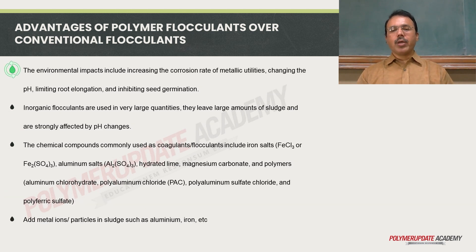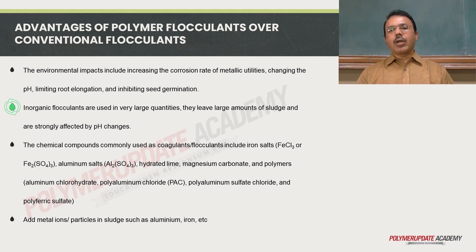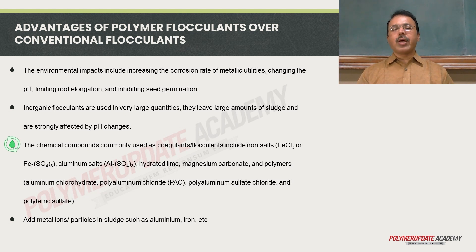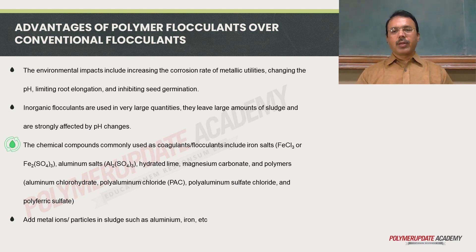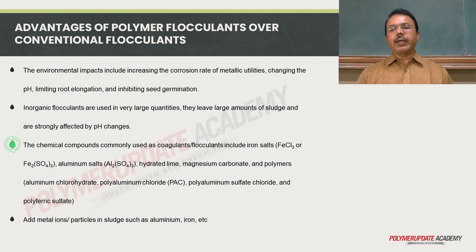The environmental impacts include increasing the corrosion rate of metallic utilities, changing the pH of water, limiting root elongation, and inhibiting seed germination in plants. Inorganic flocculants are used in very large quantities, leave large amounts of sludge, and are strongly affected by pH changes. The chemical compounds commonly used include salts of iron like FeCl₃ or Fe₂(SO₄)₃, salts of aluminum like Al₂(SO₄)₃, hydrated lime, magnesium carbonate, and polymers like aluminum chlorohydrate, polyaluminum chloride, polyaluminum sulfate chloride, and polypharic sulfate.